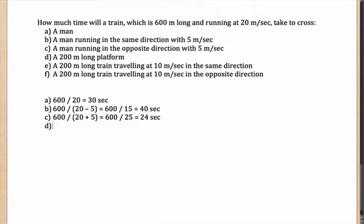How about when the train needs to cross a 200-meter long platform? Now the distance the train needs to cover is not just 600 but an extra 200 meters for the platform. The speed is still the speed of the train, because the platform is a static object. So the answer becomes 800 divided by 20, which is 40 seconds.